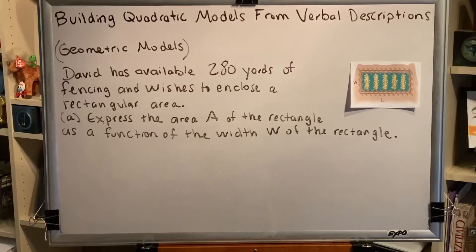David has available 280 yards of fencing and wishes to enclose a rectangular area. Part A: express the area A of the rectangle as a function of the width W of the rectangle. Okay, we're provided with this diagram.